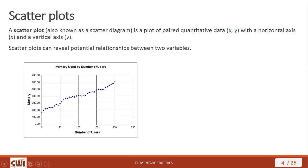Looking at a scatter plot of number of users versus memory, you can see that the data points are kind of forming more or less a straight line as you go from left to right. That suggests some sort of relationship, and we would actually conduct further statistical analyses to determine the details of that relationship.